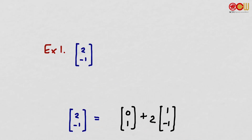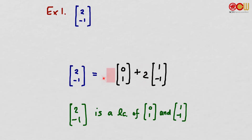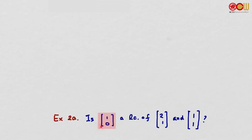For example, consider the vector (2, 1). It can be written as the vector (0, 1) plus 2 times (1, -1). The top entry gives 2, and the bottom entry gives -1. So the vector (2, -1) is a linear combination of (0, 1) and (1, -1). The linear combination coefficients are 1 and 2.